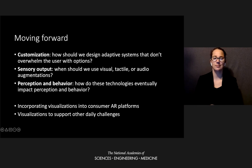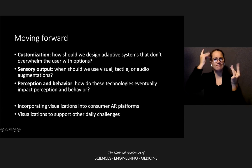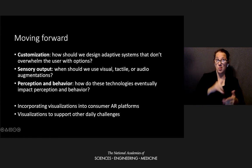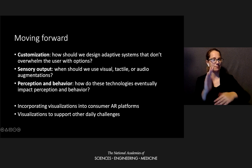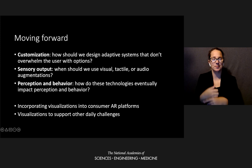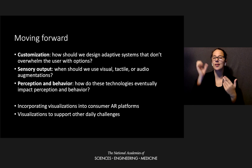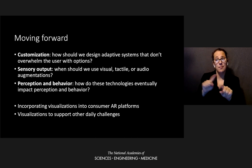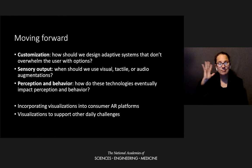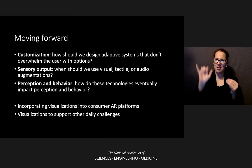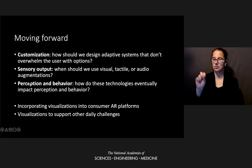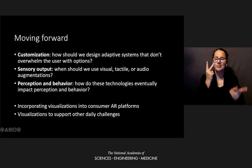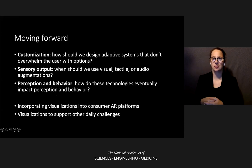Moving forward, there are many interesting questions to think about, some lower level, some higher level. Customization is always an interesting question because there's such a range of visual conditions. With people with disabilities generally, there is a vast range of not just degree of ability, but also people's preferences, prior experiences, and desires. It's important to design systems that can be customized for the user without being overwhelming. Sensory output is also important — understanding when to use visual versus audio output. And the next step is to understand how these technologies affect people's perception and behavior in real life.